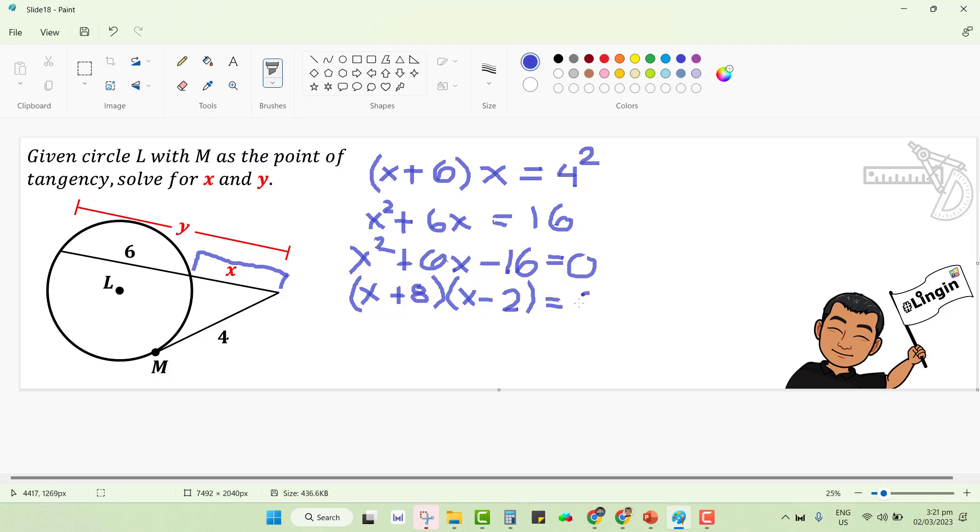So these are the two factors of the given quadratic trinomial. Using zero factor property, we could equate both factors to zero to get the intended values of x. The first one is x equals to negative 8. And the second is if x minus 2 is equal to zero, x could be equal to positive 2.